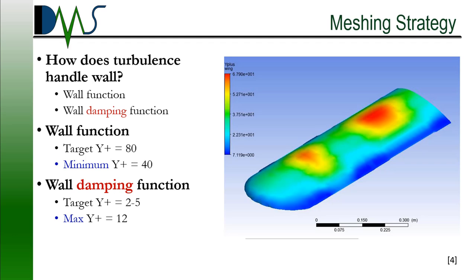The second option is a wall damping function. This one is going to be where you're actually really putting in a very detailed mesh. And you're actually meshing in and resolving that entire laminar sub-layer. So for that one, you really want a detailed Y-plus. You want a Y-plus of probably 2.5. A maximum of 12. You're going to want to resolve and get every single detail of that Y-plus in there.